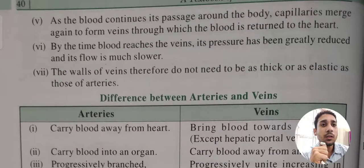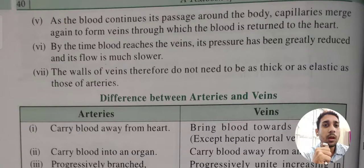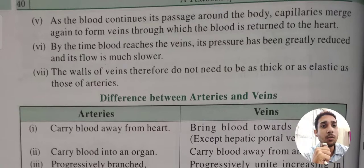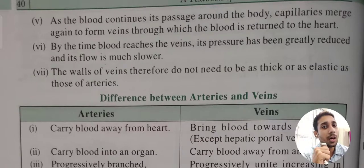As blood continues its passage around the body, the capillaries merge to form veins, through which blood is returned to the heart. By the time blood reaches the veins, its pressure has been greatly reduced and flow is much slower. Therefore, the walls of veins do not need to be as thick as arteries and are quite thin in comparison.